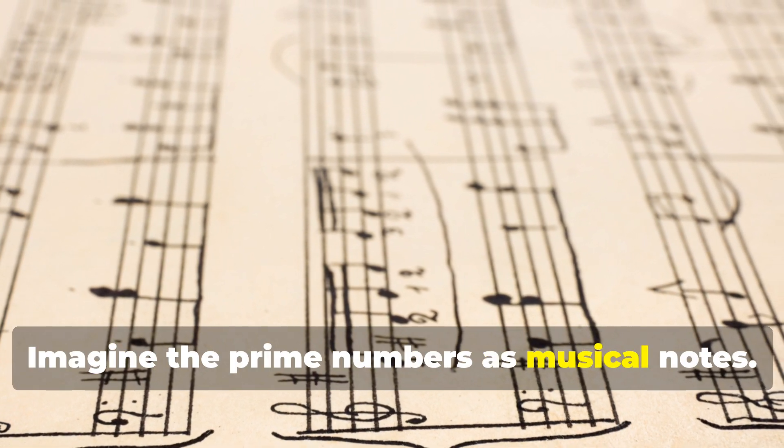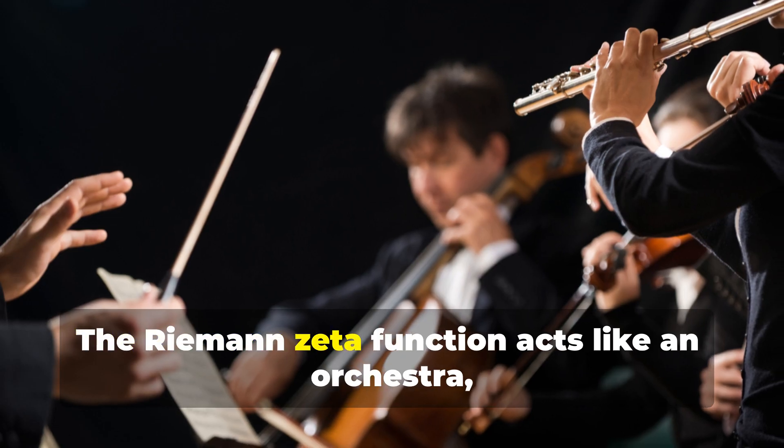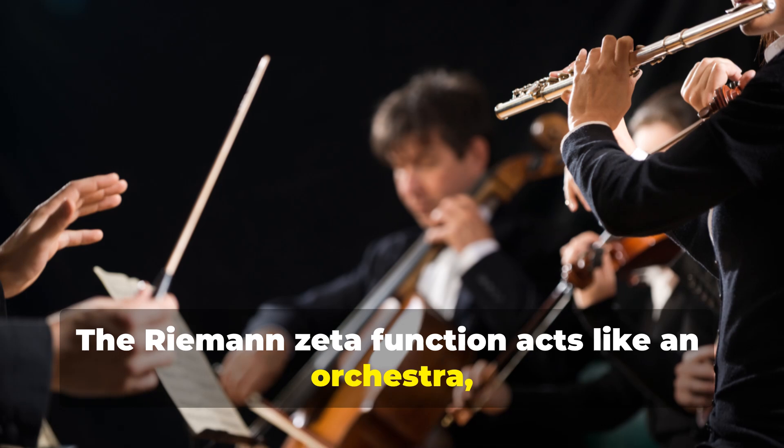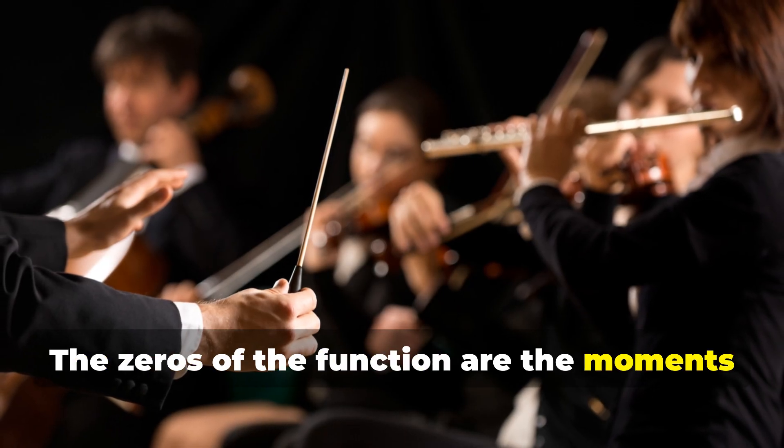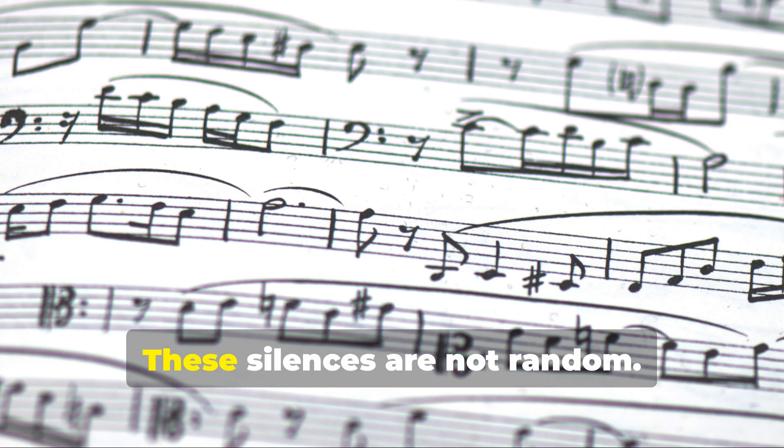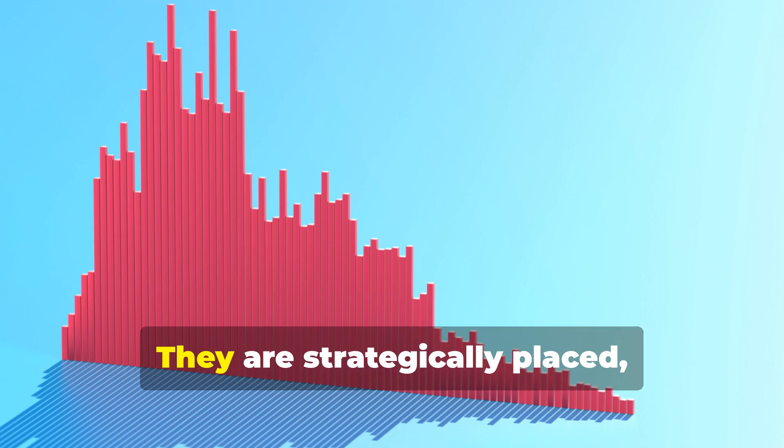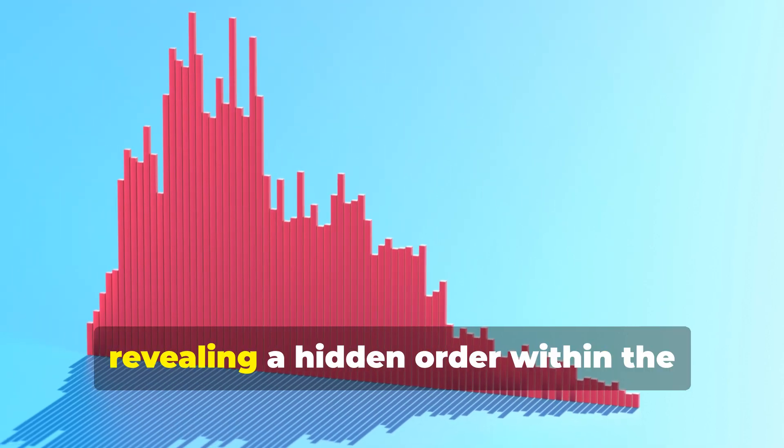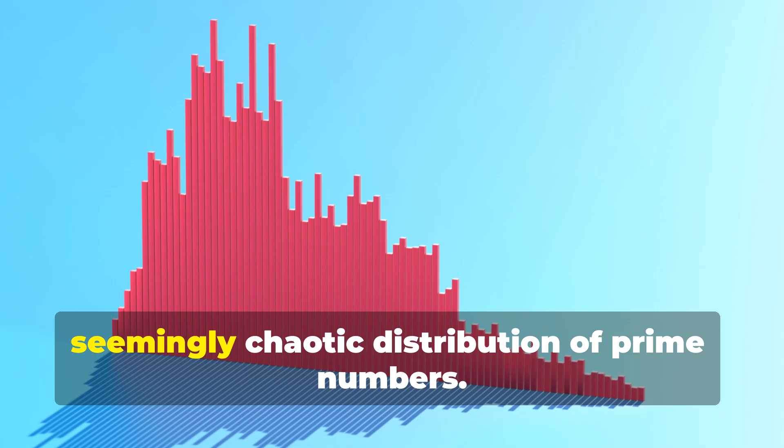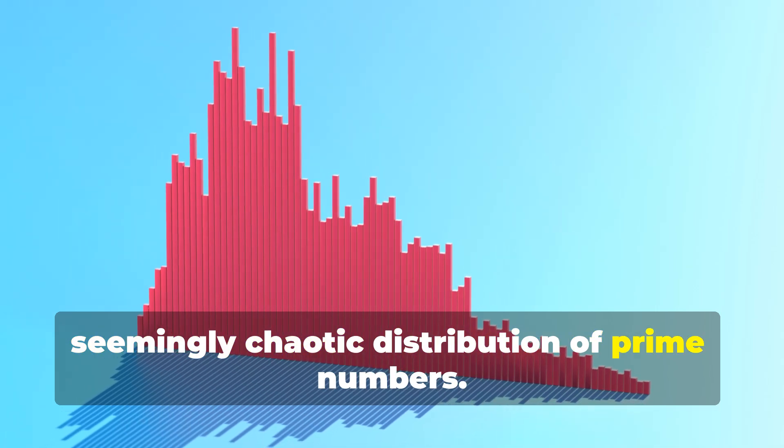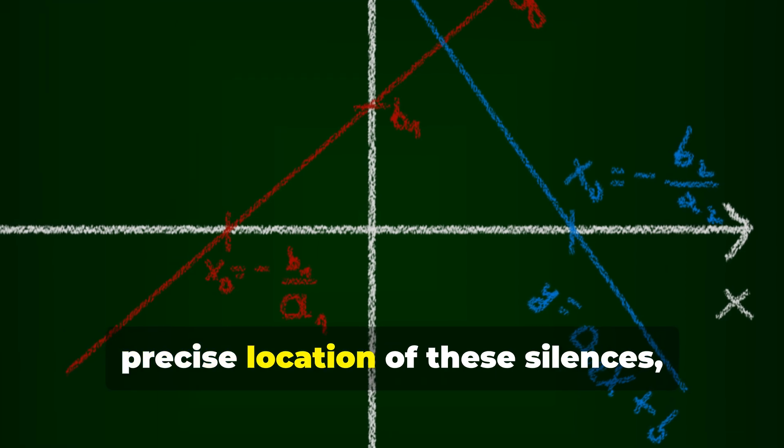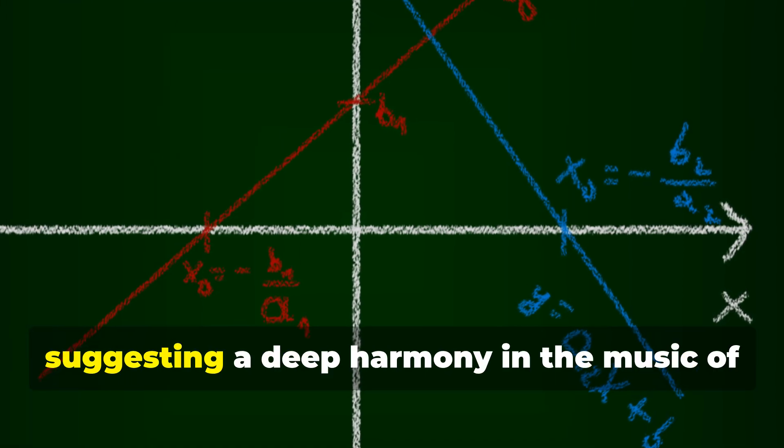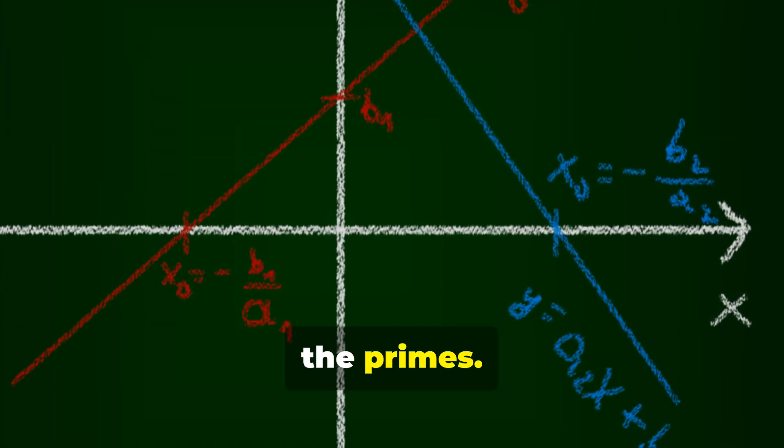Imagine the prime numbers as musical notes. The Riemann zeta function acts like an orchestra, playing a symphony with these notes. The zeros of the function are the moments of silence in this symphony. These silences are not random. They are strategically placed, revealing a hidden order within the seemingly chaotic distribution of prime numbers. The Riemann hypothesis predicts the precise location of these silences, suggesting a deep harmony in the music of the primes.